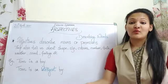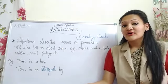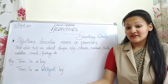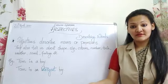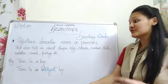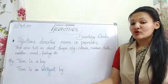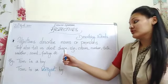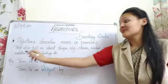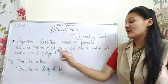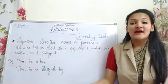What do adjectives also tell us about? In junior classes — in first and second — you studied specifically that adjectives tell us about the shape, size, colors, numbers, taste, weather, sound, feelings, and so on.